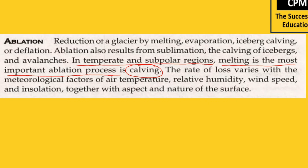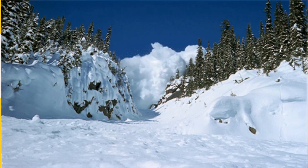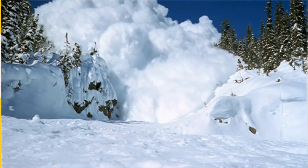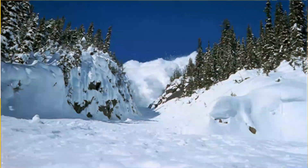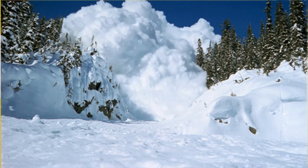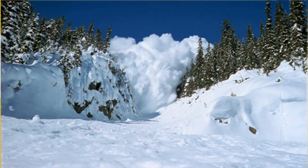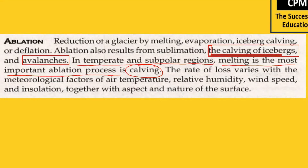The calving here is the calving of icebergs when they come out. Sometimes in the mountainous region it can also be in the form of avalanche. An avalanche is a kind of ablation — due to melting in the mountainous region, there is a movement of ice and snow downward. Sublimation is also a process of ablation.